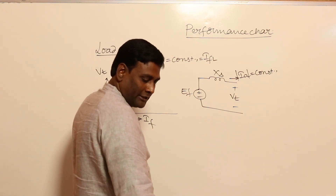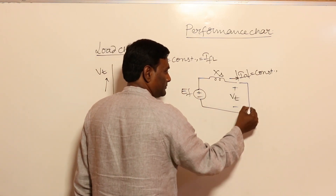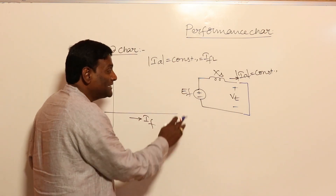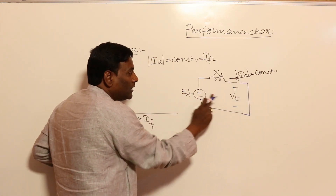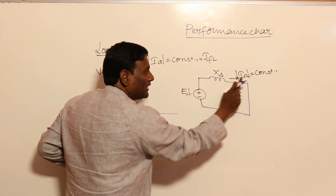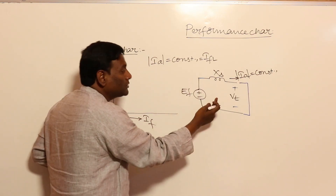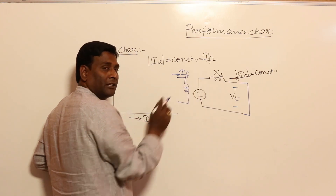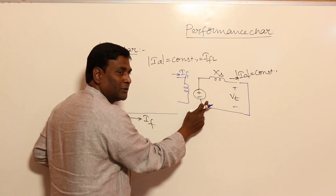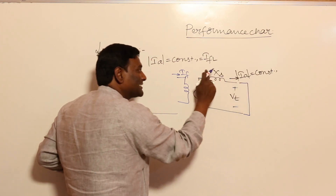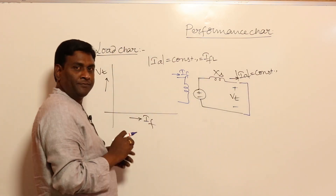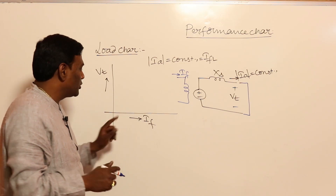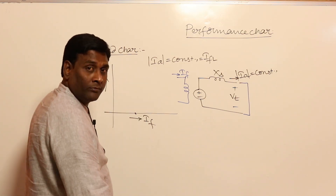For example, if the alternator is short-circuited, VT is zero. At that condition, IFL × Xs = EF. In order to produce that EF, field current must be supplied — if field current is non-zero, EF is non-zero. So when VT is zero, IF is some positive value, and the curve starts from that positive field current point.